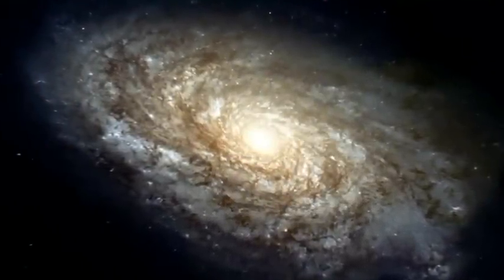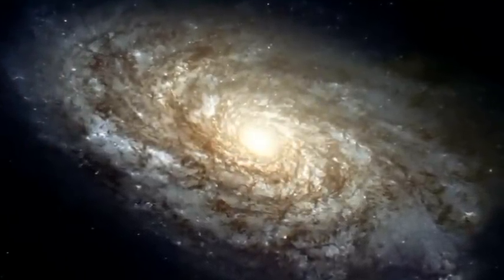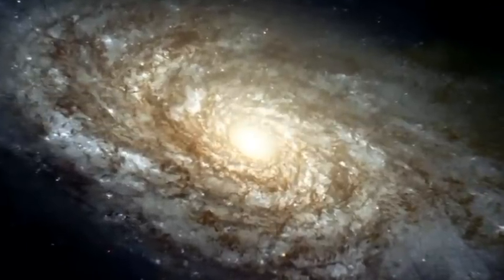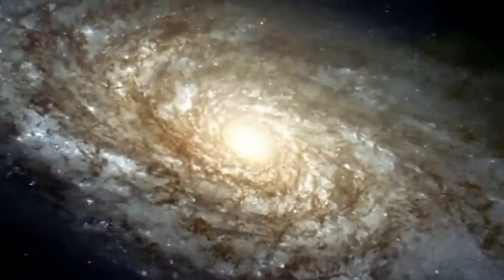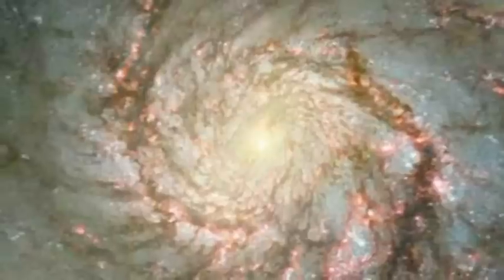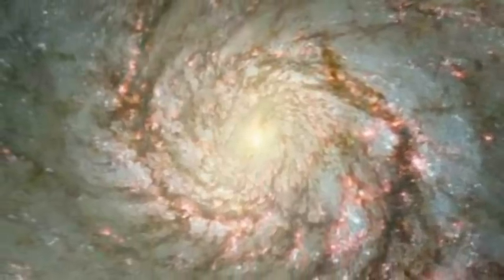This galaxy is an example of a common type. It's called a spiral galaxy because of the arms that appear to spiral out from the nucleus. The yellowish color of a spiral galaxy's nucleus is due to light from old yellow stars.